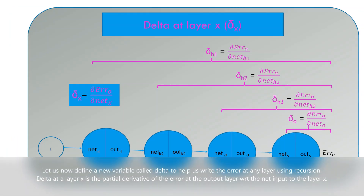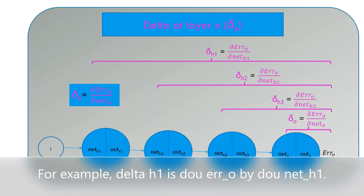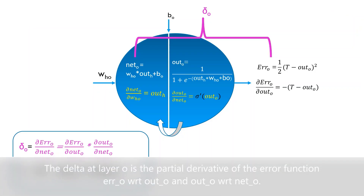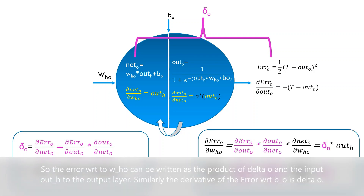Let us now define a new variable called delta to help us write the error at any layer using recursion. Delta at layer x is the partial derivative of the error at the output layer with respect to the net input to layer x. For example, delta H1 is ∂errorO / ∂netH1. Delta at layer O is the partial derivative of errorO with respect to outO and outO with respect to netO. So, the error with respect to WHO can be written as the product of delta O and the input outH to the output layer. Similarly, the derivative of the error with respect to BO is delta O.